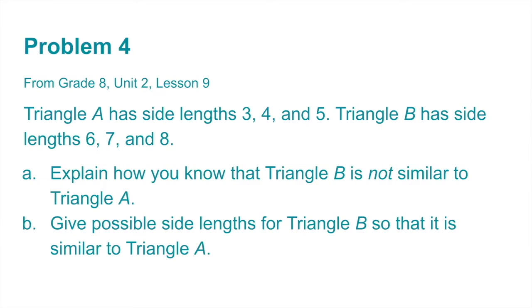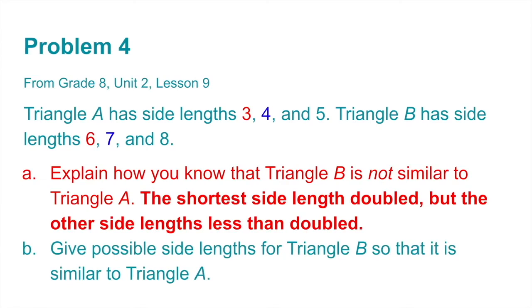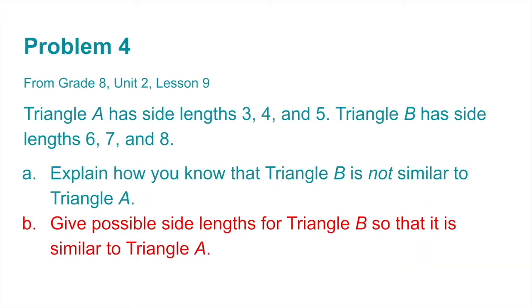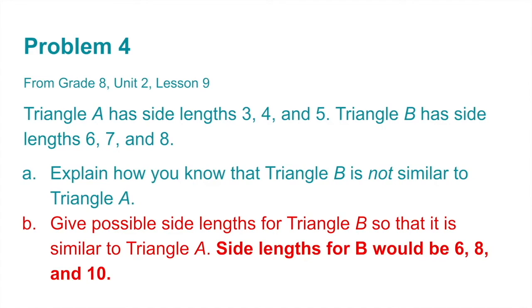Number 4. Triangle A has side lengths three, four, and five. Triangle B has side lengths six, seven, and eight. Part A: Explain how you know that triangle B is not similar to triangle A. Triangle A's smallest side is three; triangle B's smallest side is six, which is double. But if we doubled four we'd get eight — triangle B's second side is seven, not eight. The shortest side is doubled, but the other side lengths are less than doubled. Part B: Give possible side lengths for triangle B so that it is similar to triangle A. Double each side of A: double three gives six, double four gives eight, double five gives ten. Side lengths for similar B would be six, eight, and ten.